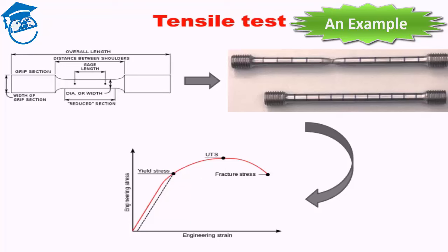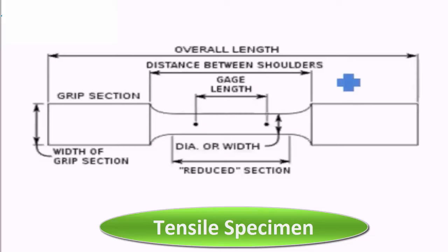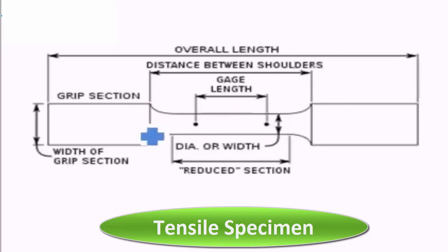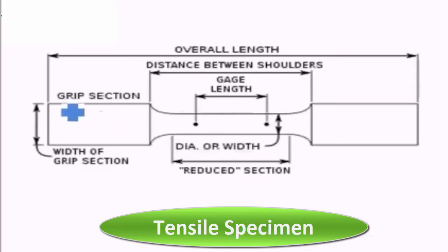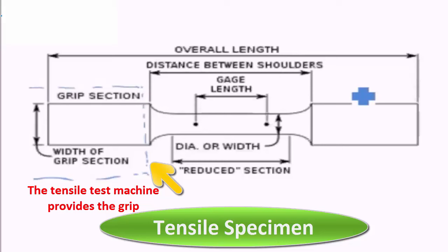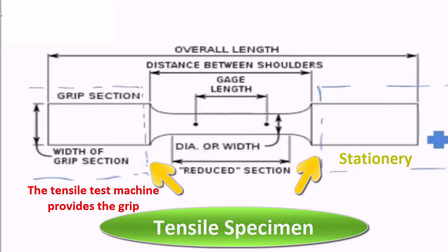In a tensile test, you have a tensile specimen with standard dimensions. The sample can be flat or rounded. The grip section is where the tensile test machine holds the sample — one grip remains stationary and the other is pulled. This is the grip region.